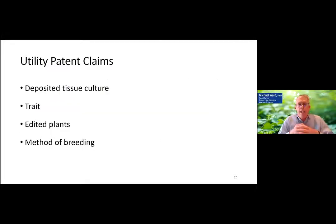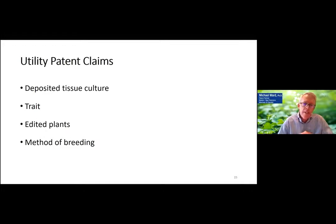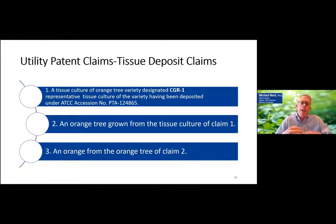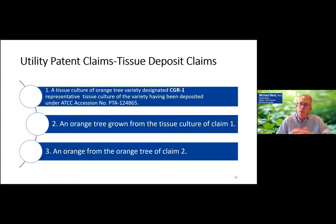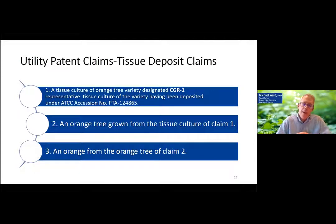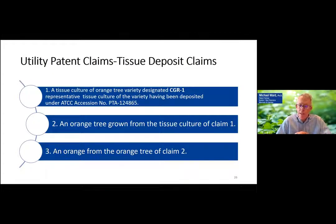Utility patent claims can be a variety of different types. Here's an example of a tissue deposit claim for a utility patent: you deposit the tissue culture for the orange tree with something like the American Type Culture Collection, which gives you a particular number. You then claim that particular tissue deposit — an orange tree grown from that deposit, and then an orange from that orange tree. These are the dependent claims that would claim priority to that first independent claim.